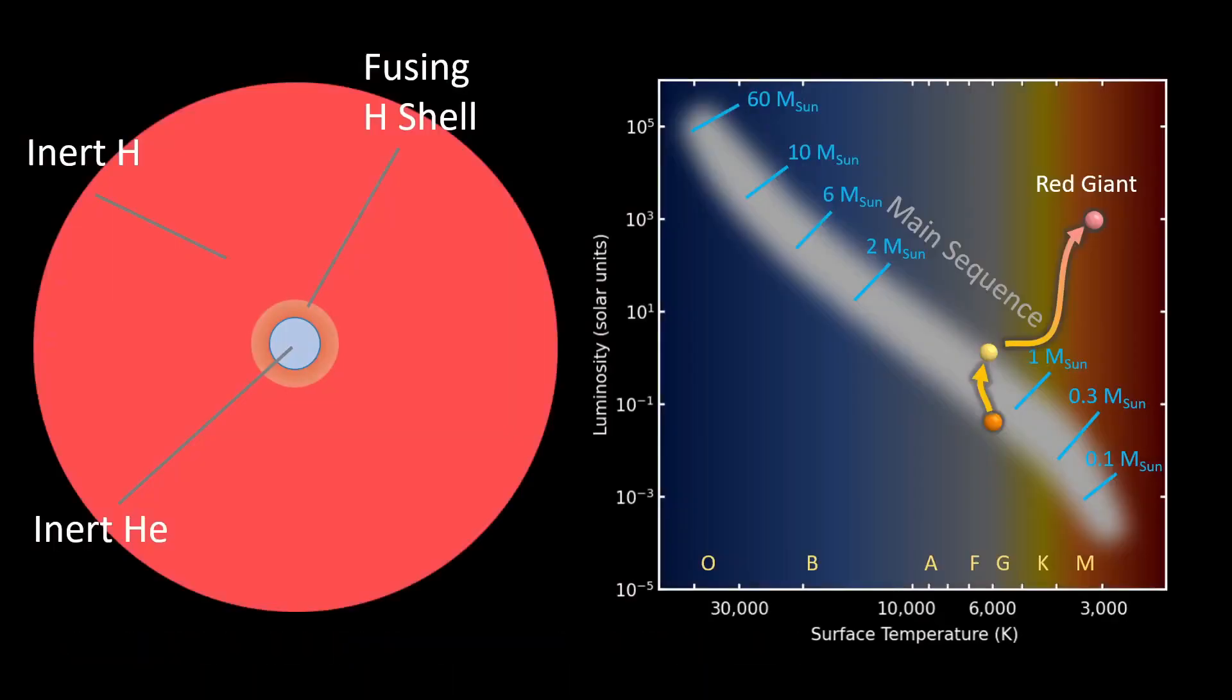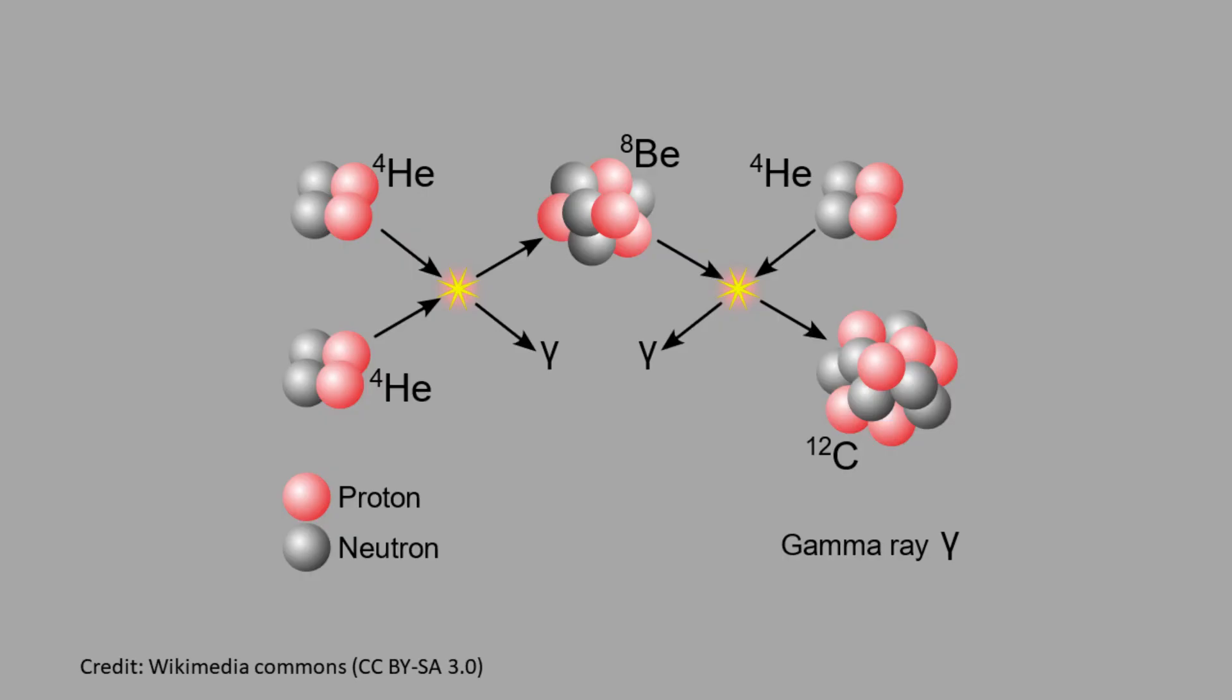As the core contracts, its temperature finally reaches 100 million Kelvin. At that high temperature, helium starts fusing into a process known as the triple alpha process. Three helium atoms collide and fuse into one carbon atom, releasing energy in this process.